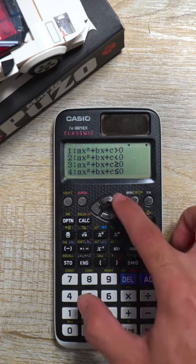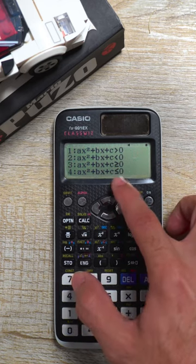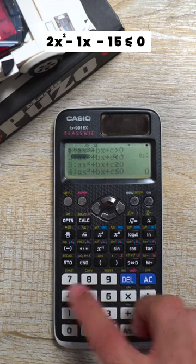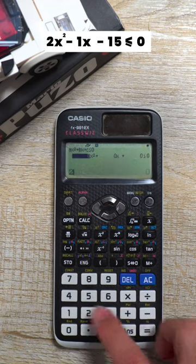Carefully select the type of quadratic inequality that you want to solve. The one we want to solve over here is number four. Now you enter the coefficients: coefficient of x squared is two, coefficient of x is minus one, then the constant is minus fifteen.